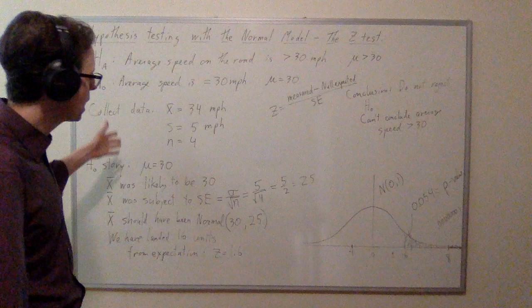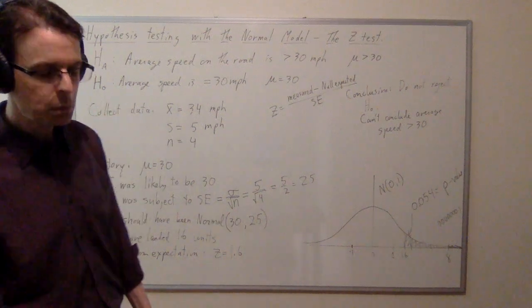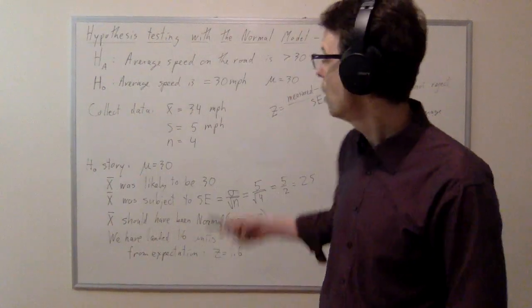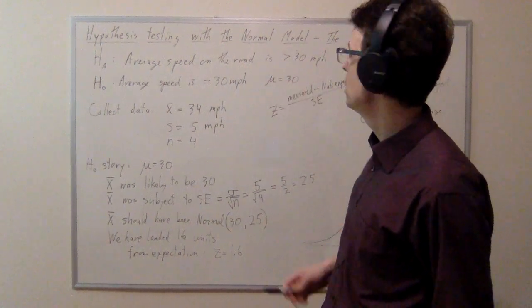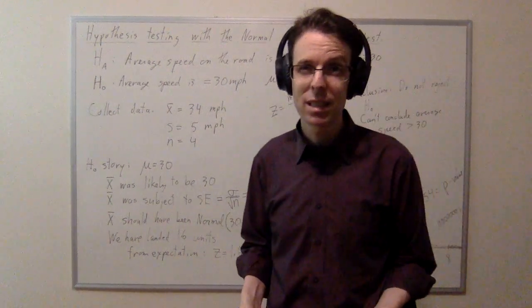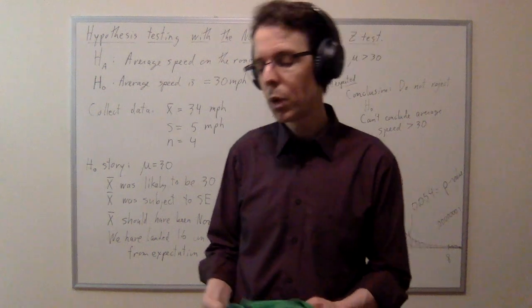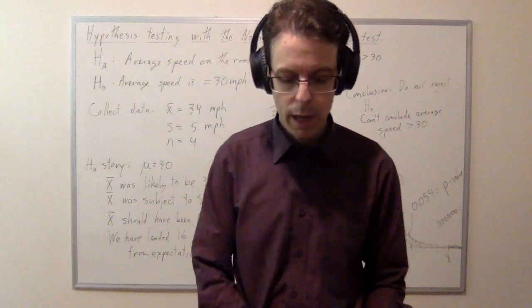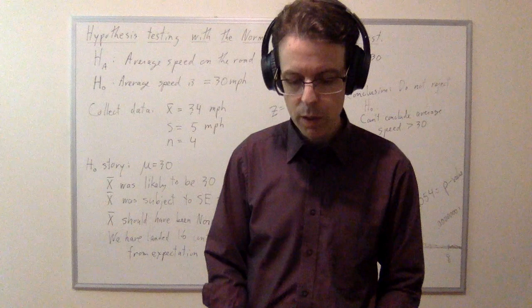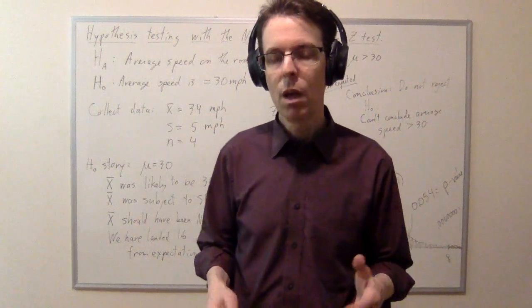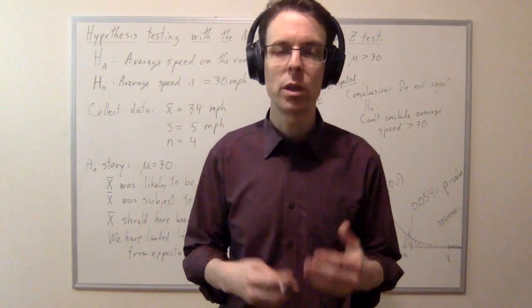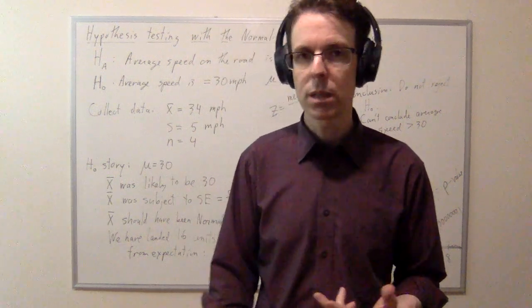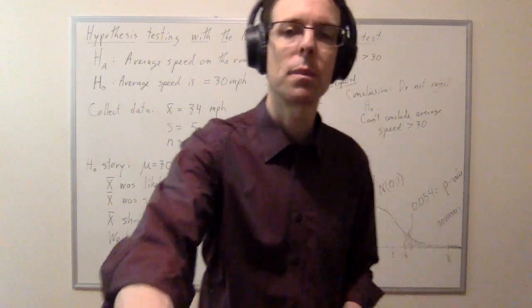This has been an example for a mean — we calculated the average speed on the road. It's basically the same game for a proportion. In the next video, we're going to do exactly the same thing but measure a proportion and do a hypothesis test comparing a proportion against a baseline.